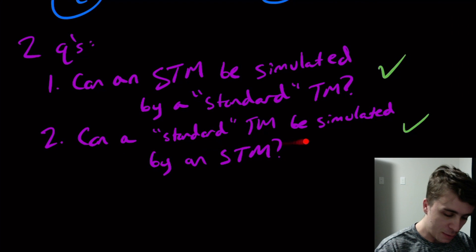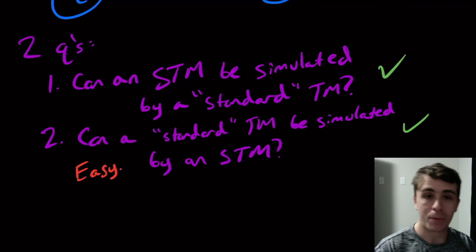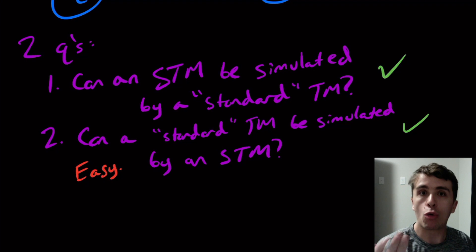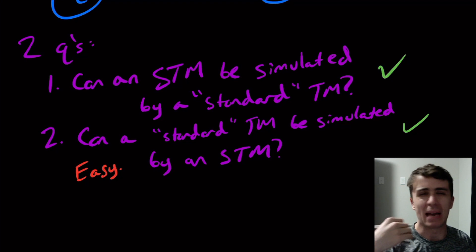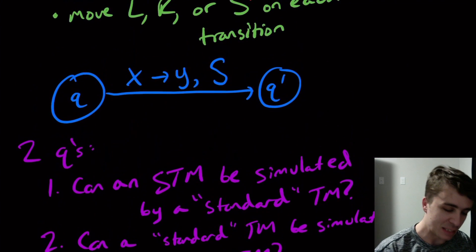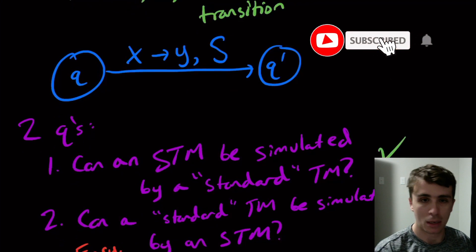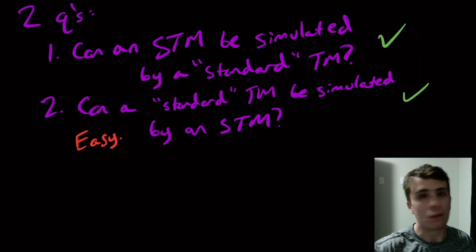So actually the second question is really, really easy. And I'll even write the word easy on it purely because what we can do is just run the machine normally. We can just copy and paste the original standard machine we're trying to simulate. And that already is a stay put Turing machine. The only things we need for transitions are the state itself and what is being read. This is totally irrelevant to this machine being deterministic. So the answer is yes, of course. We just do whatever the original machine did.